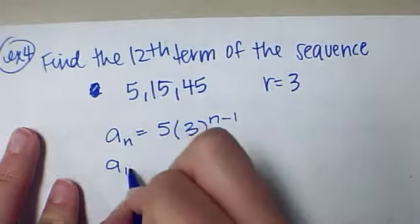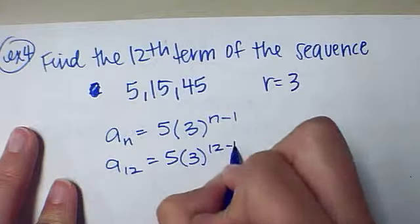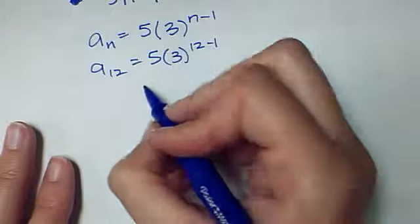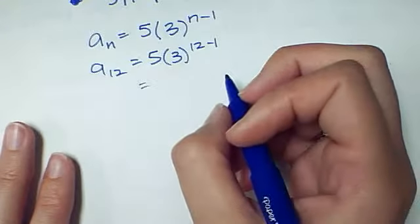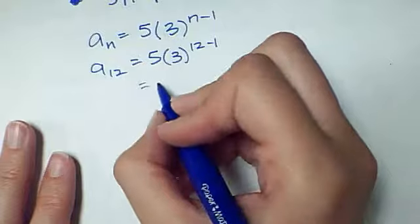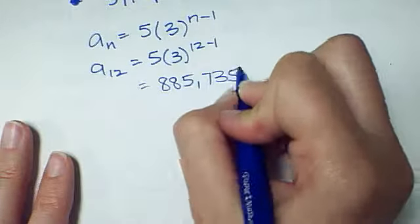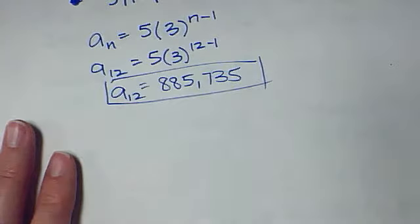5 times 3 to the 12 minus 1. And this is a very large number when I use my calculator. 3 to the 11th power is 177,147 times 5 is 885,735. And that's the 12th term of the sequence.